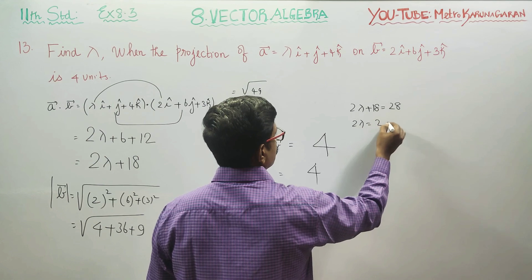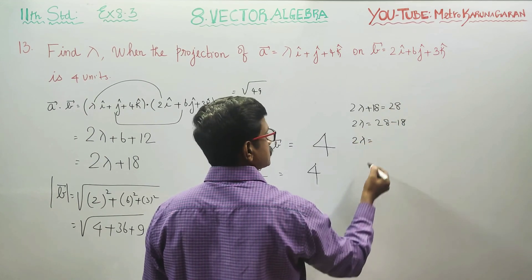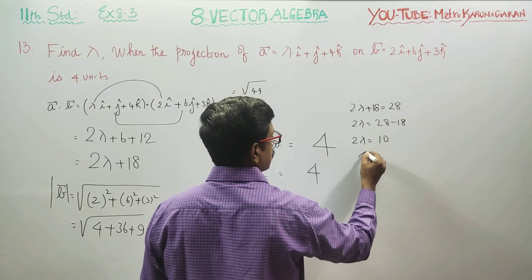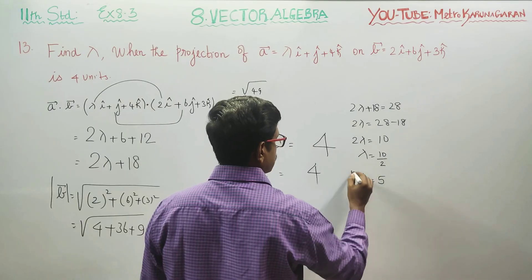2 lambda equals 28 minus 18, which is 10. Lambda equals 10 divided by 2. Lambda equals 5 is your answer.